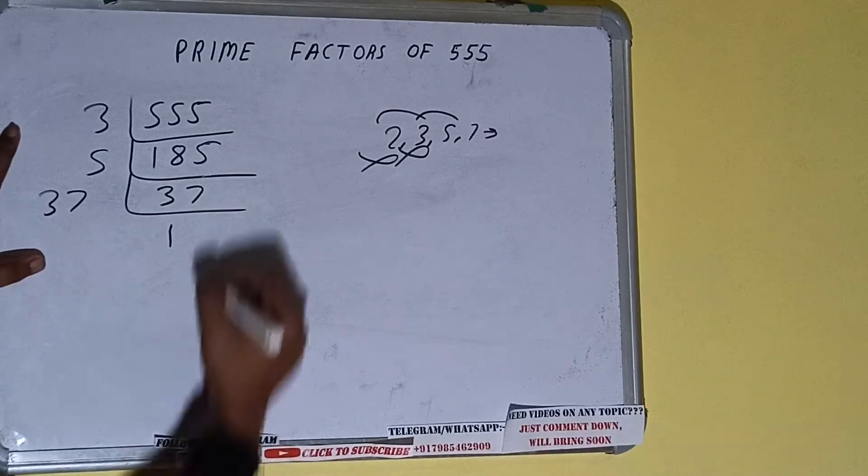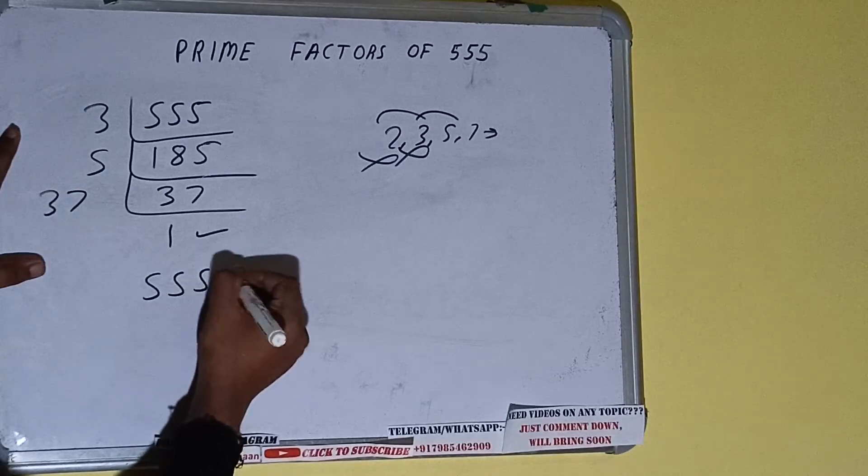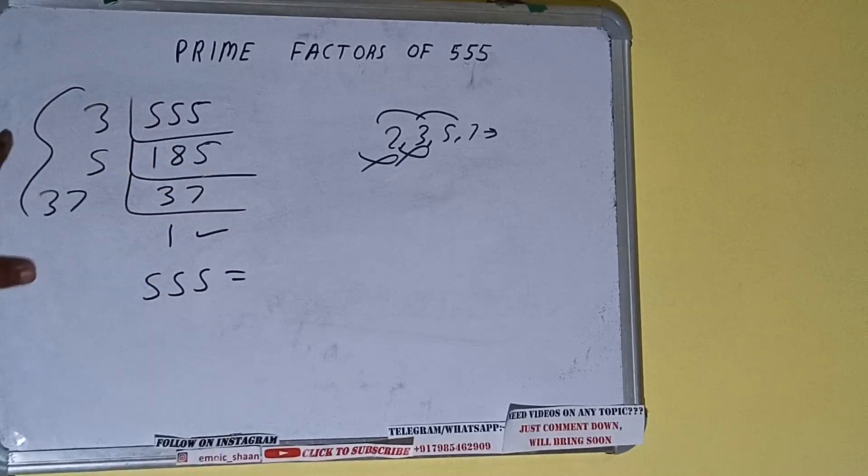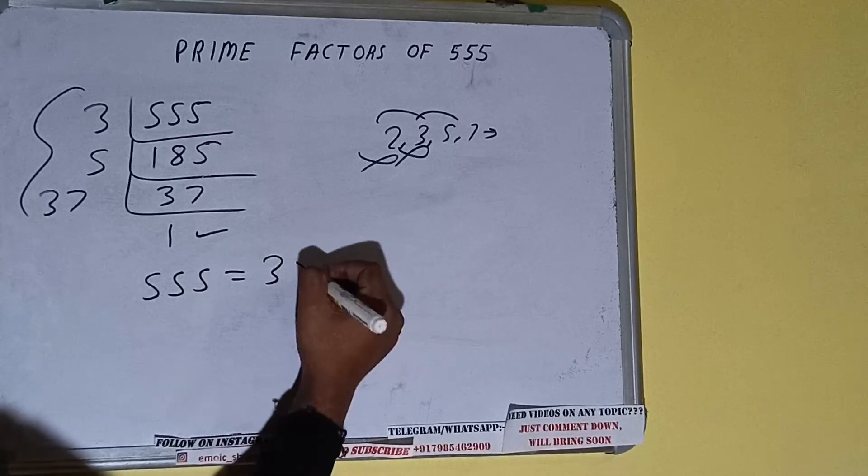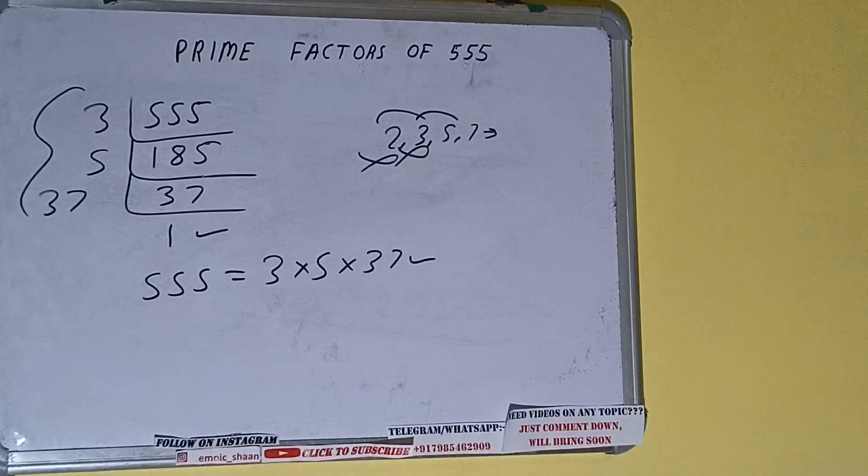Once we get 1, we need to stop and do one last thing. The prime factors of 555 equals multiplying whatever we have on the left-hand side: 3 times 5 times 37. That will be the answer.